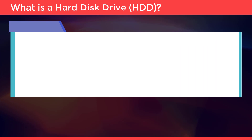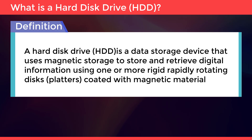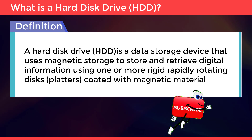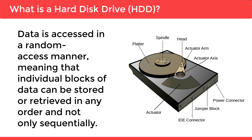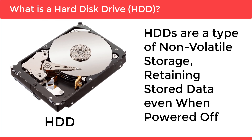A hard disk drive is a data storage device that uses magnetic storage to store and retrieve digital information using one or more rigid, rapidly rotating disks coated with magnetic material. The platters are paired with magnetic heads, usually arranged on a moving actuator arm, which read and write data on the platter surfaces. Data is accessed in a random access manner, meaning individual blocks of data can be stored or retrieved in any order, not only sequentially.